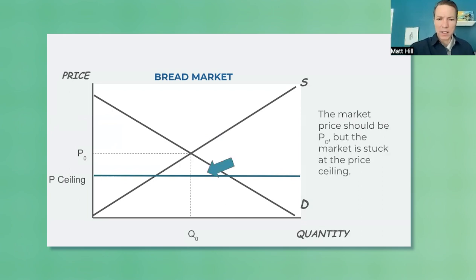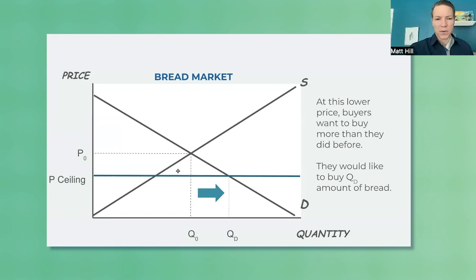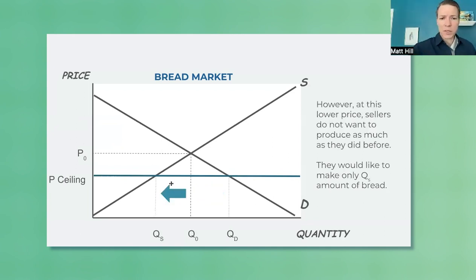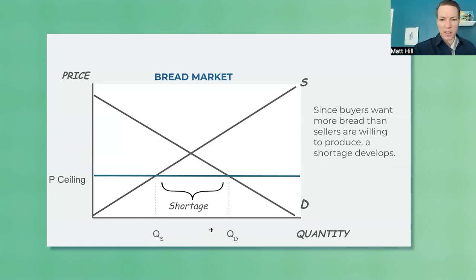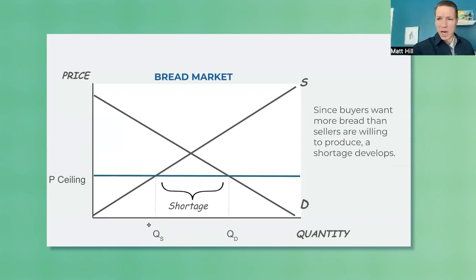All right — the price should be here, but it's bumping into the price ceiling here. So what's going to happen is consumers are going to say, oh, this is a nice low price — we go down the demand curve, they're going to want more. Now bread's cheap, I'll buy some more bread. Producers are going to say, whoa, bread's cheap — we go down the supply curve, and producers are going to want to produce less. So now we have this gap developing between buyers and sellers where buyers want more than producers want to provide.